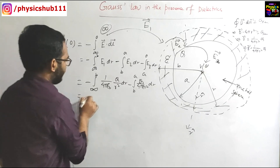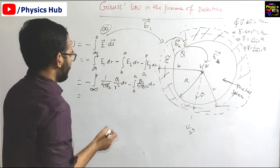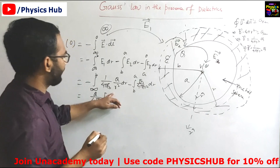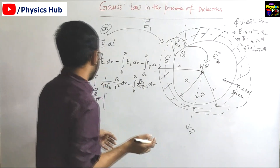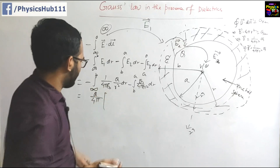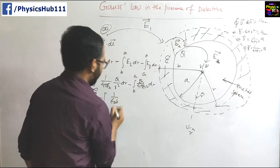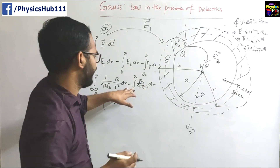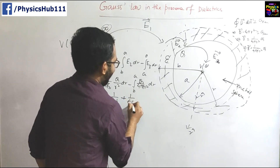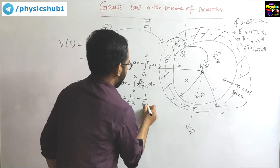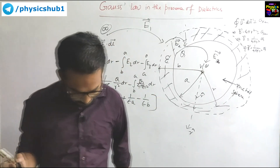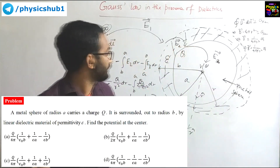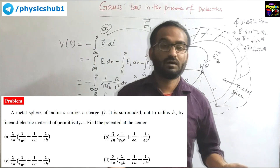Evaluating the integrals, taking q / (4 pi) as common and integrating 1/r squared to get minus 1/r, we obtain: V(0) = (q / 4 pi) times [1/(epsilon naught b) + 1/(epsilon a) minus 1/(epsilon b)]. This is the correct answer and matches option A. I hope you have understood how to utilize Gauss law in the presence of dielectrics. I have explained the theory and also discussed a problem related to it.